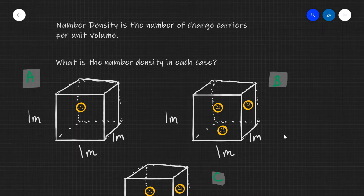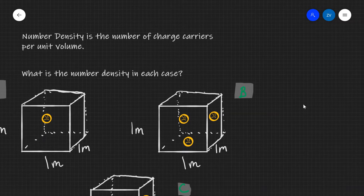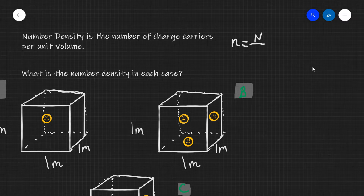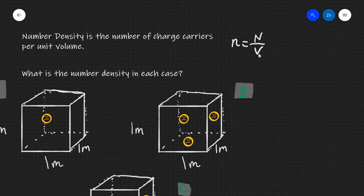So what actually is number density? As we can read in this definition, it's the number of charge carriers per unit volume. Let's translate this written statement into mathematics. The number density is given the symbol lowercase n, and this is going to equal the number of charge carriers divided by the volume. The charge carriers are assigned capital N, and the volume is just V. Remember, anytime we have 'per unit volume' we're actually dividing by the volume.